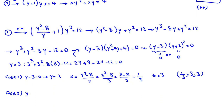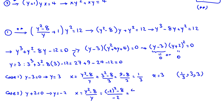Case 2: y + 2 = 0, so y = −2. Then x = (y² − 8)/y = (4 − 8)/(−2) = (−4)/(−2) = 2. Since z = y, we have z = −2. So the second solution is (x, y, z) = (2, −2, −2).